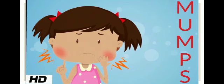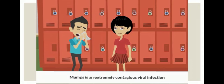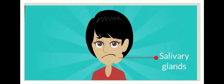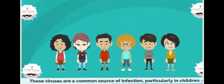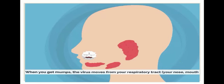Next disease: mumps. Mumps are present in the mouth area. Mumps is an extremely contagious viral infection that mostly affects the salivary glands, belonging to a family of viruses known as paramyxovirus. These viruses are commonly a source of infection, particularly in children. When you get mumps, the virus moves from your respiratory tract through your nose and mouth.